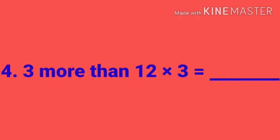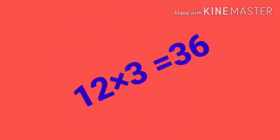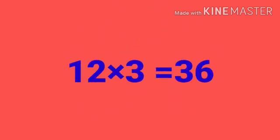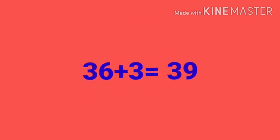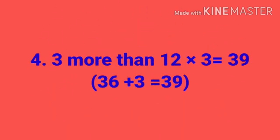Next, number 4: 3 more than 12 into 3 is equal to dash. For this sum you have to find out first 12 into 3. That is 12 threes are 36. Then 36 plus 3 is equal to 39. So 3 more than 12 into 3 is equal to 39.